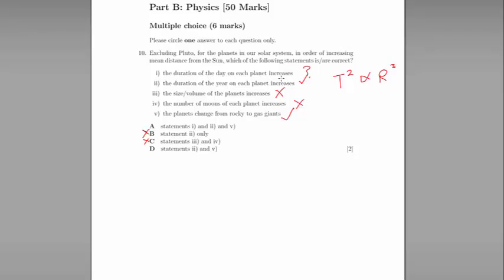The duration of the day on each planet increases. Well, as I said, there's no hard and fast rule for this one, but it's worth recognizing that Mercury and Venus both have days that are much, much longer than that of the Earth. So that one is not true. So therefore, statement D is correct.